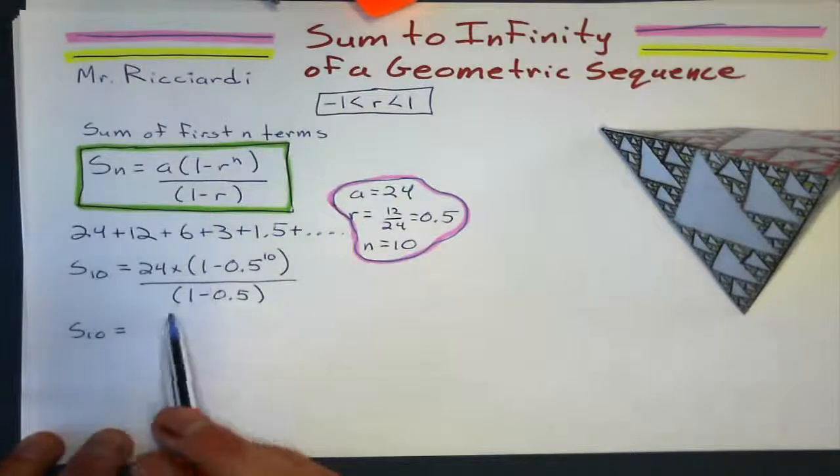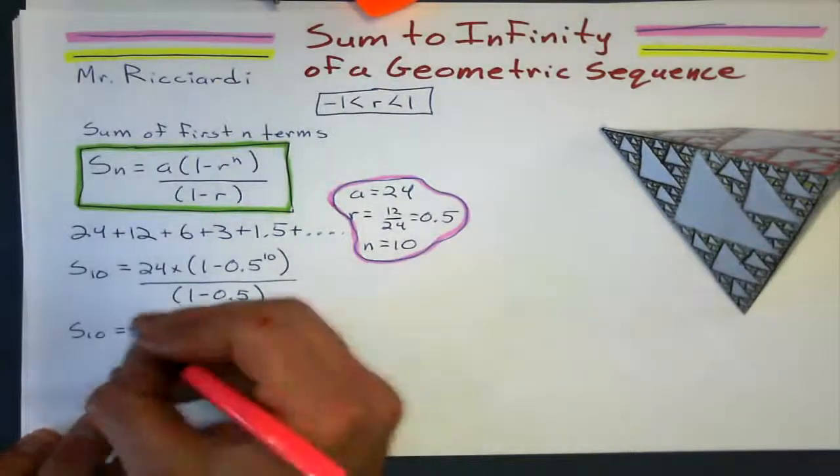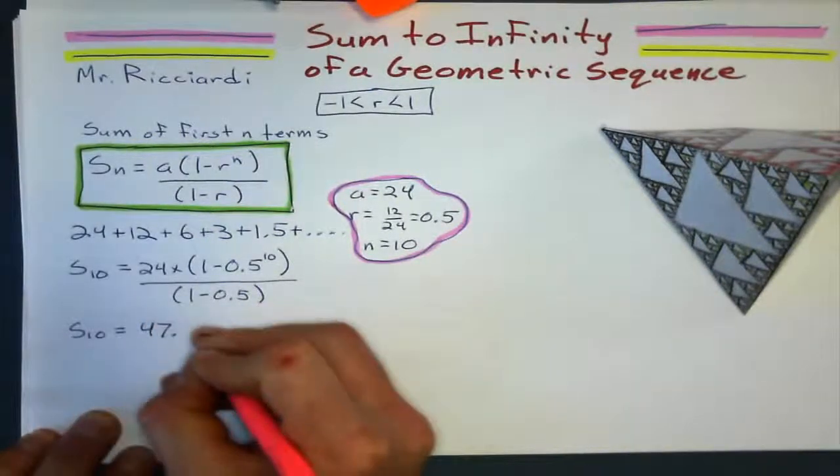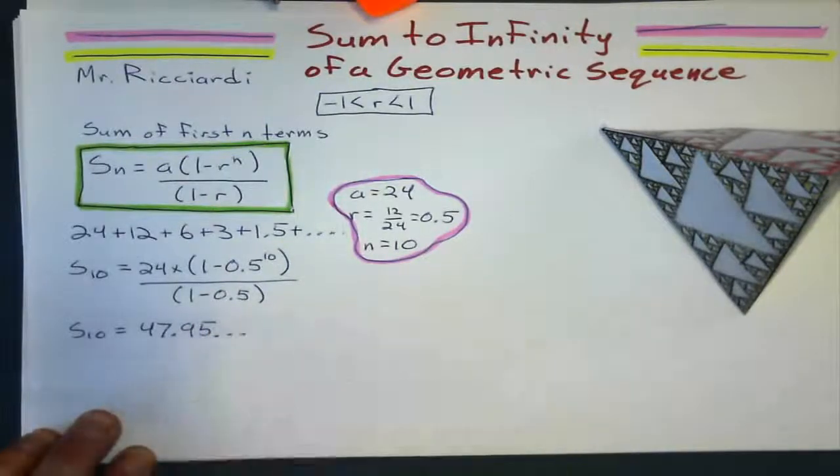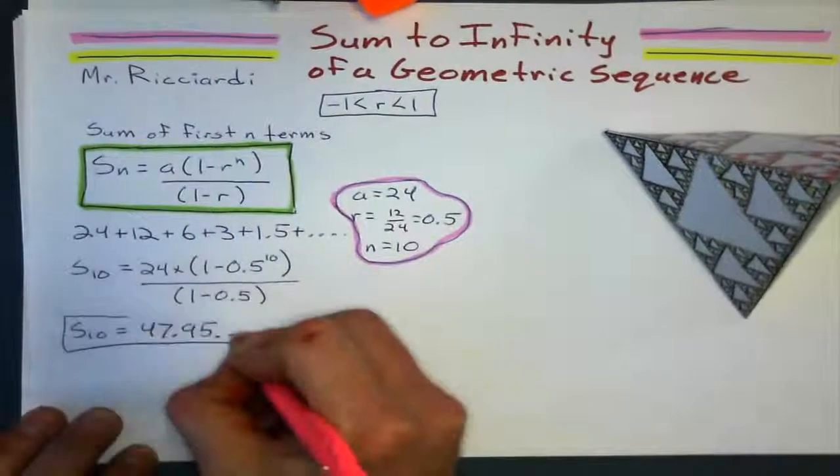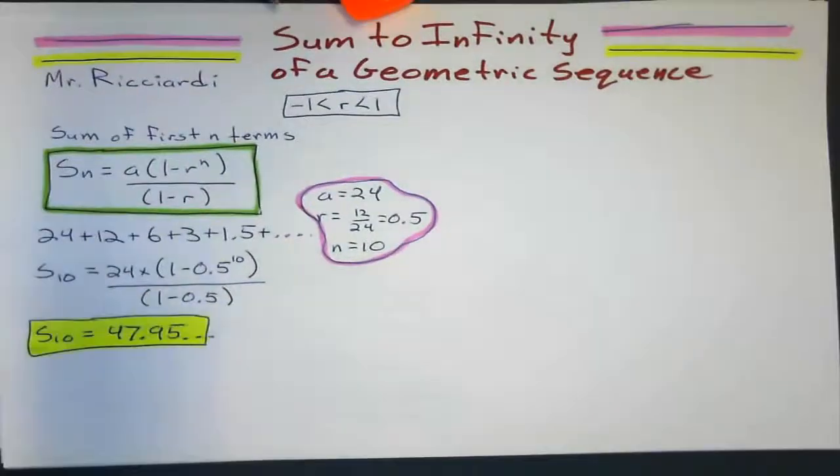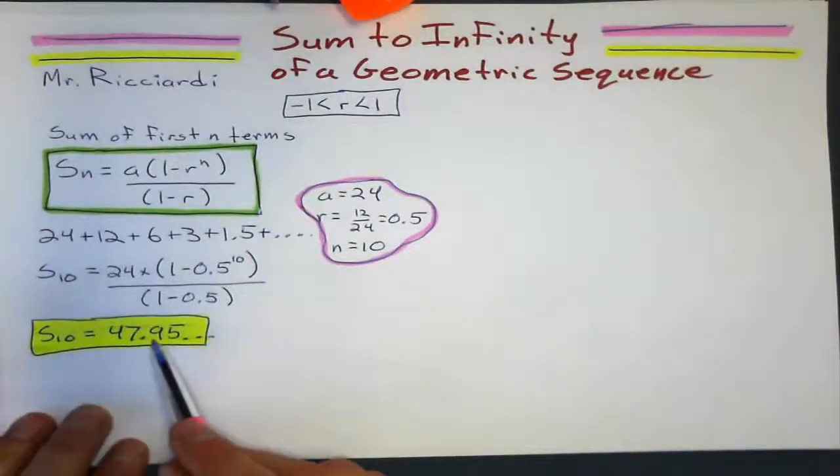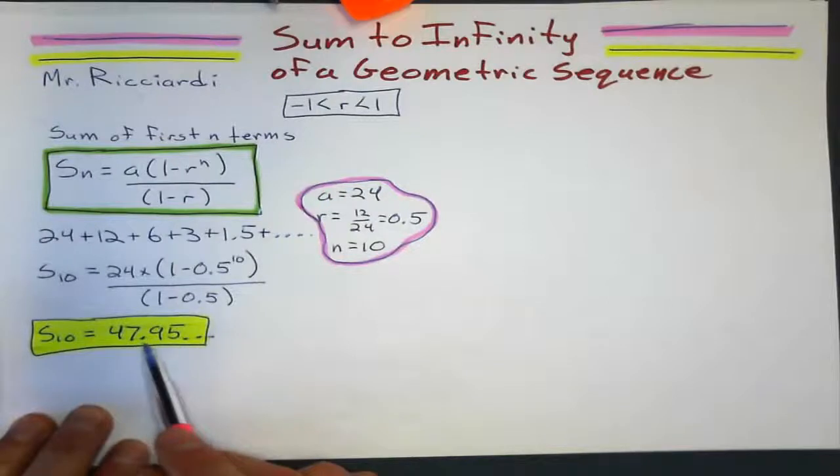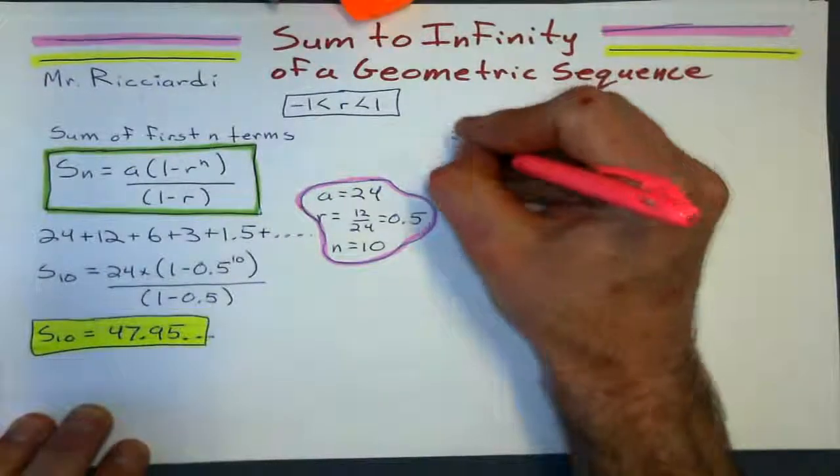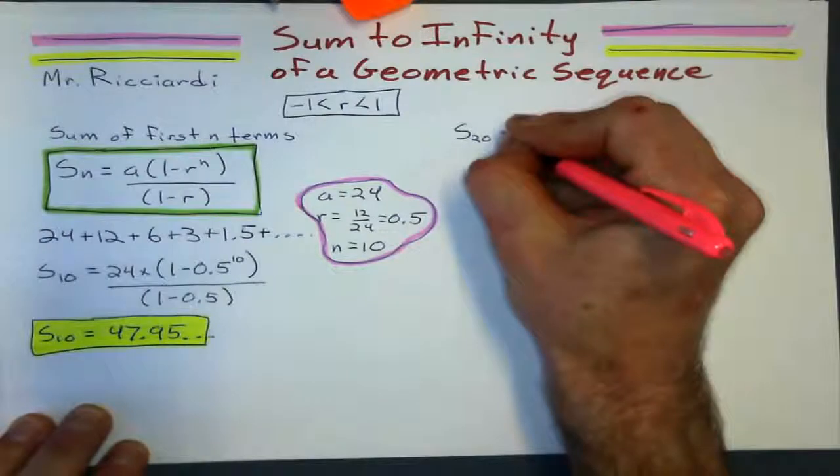Now, sum of the first 10 terms. If I work this out on the calculator, doing it correctly, I'll get somewhere around 47.95 something. Big deal. So sum of the first 10 terms give me about 47.95. What about sum of the first 20 terms?